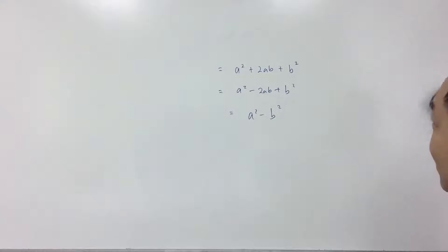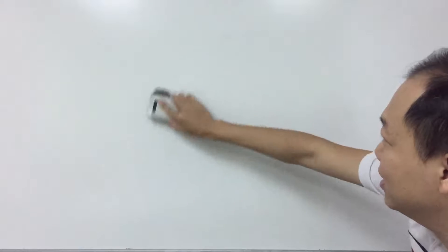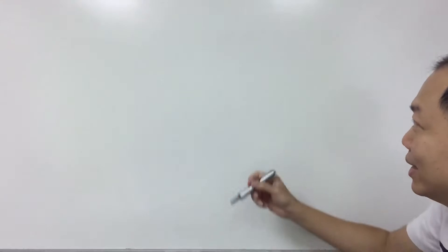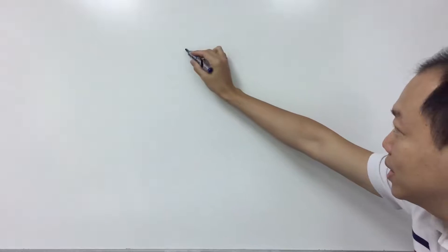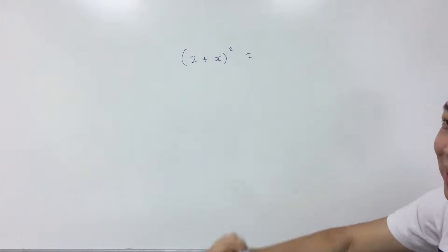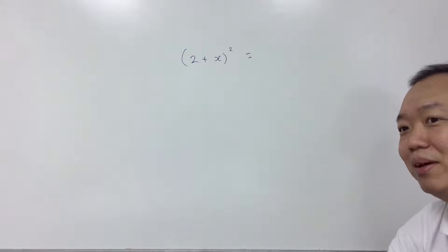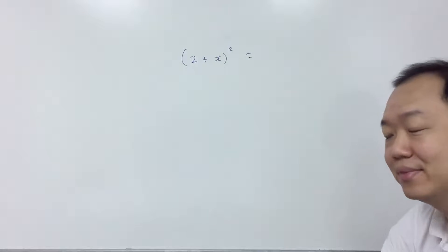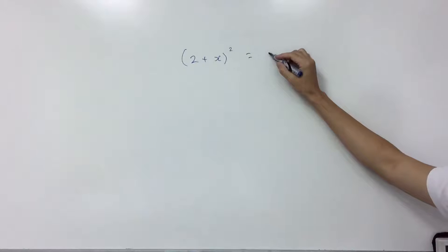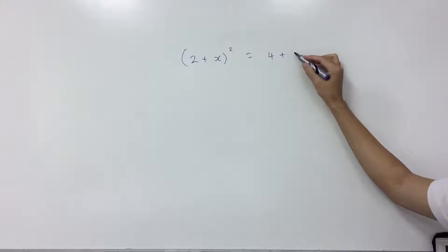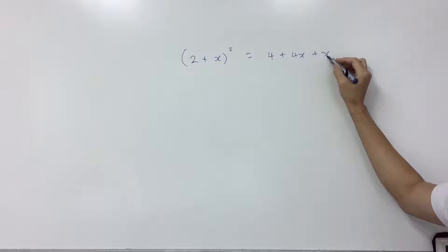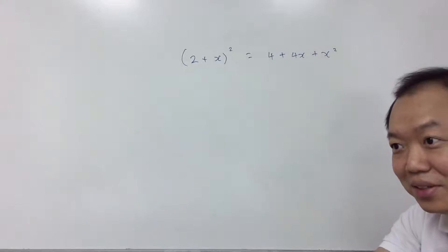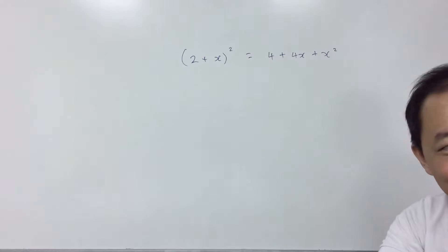Now because Shui has memorized everything, we're going to give her the tricky one. So we're going to try complicated stuff. Two plus X, bracket square. Shui, can you tell me what is this in expanded form? Four plus four X plus X squared. Yeah. Well done. That's what you're supposed to do. You must process it — like, the brain.